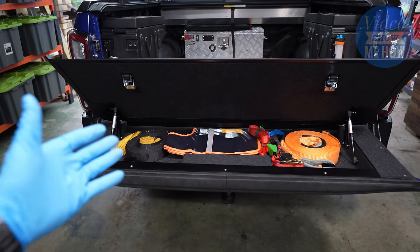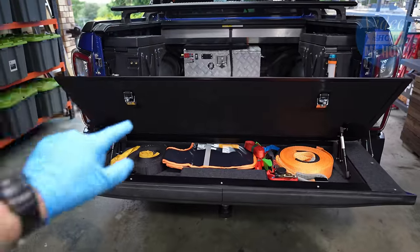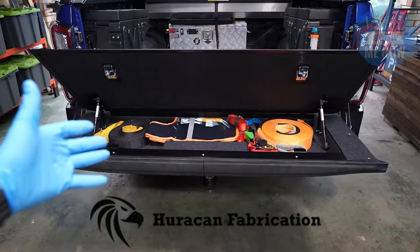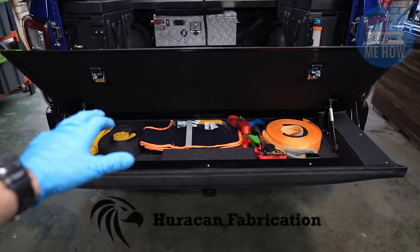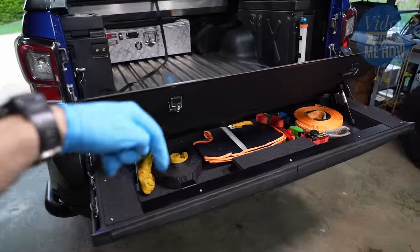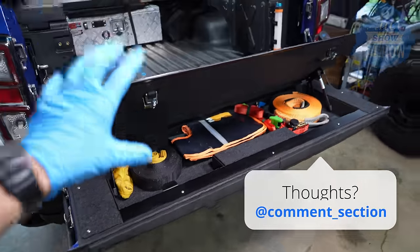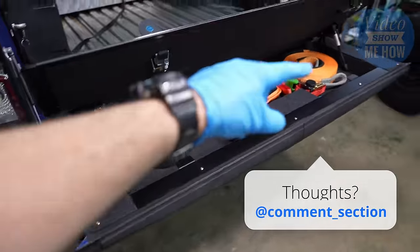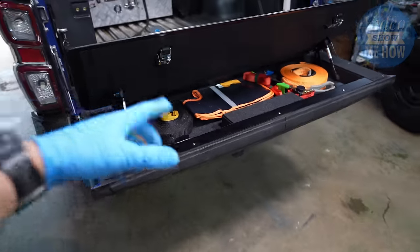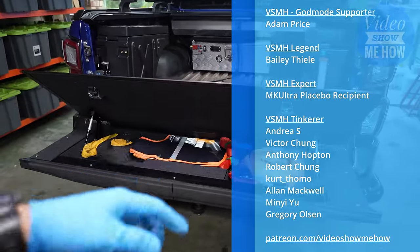So there we go. That is it for another video, guys. That is the ultimate tailgate four-wheel drive storage solution. A massive thank you to Hurricane Fabrications for, one, coming up with such an awesome solution, and, two, for supporting this video. Let me know in the comments down below as well, what do you reckon? What do you reckon about this? I absolutely love it. I think it is a great use of wasted space. But let me know. Let me know what you think down below.